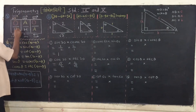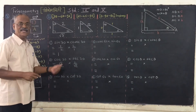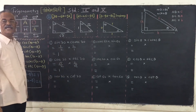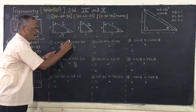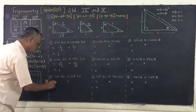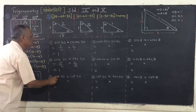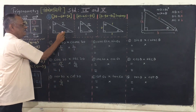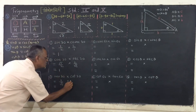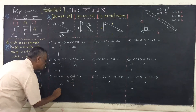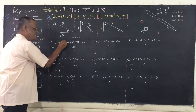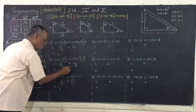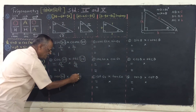Remember that O upon H gives sine, H upon O gives cosec — that is the technique. Now take the product. You are getting the product is equal to 1. Very interesting point. Sine 30 into cosec 30 — product is 1. Cos 30 into sec 30 — product is 1. Tan 30 into cot 30 — product is 1.